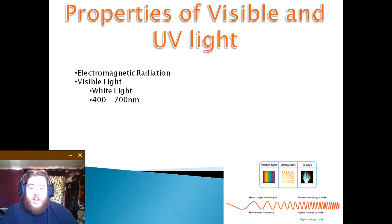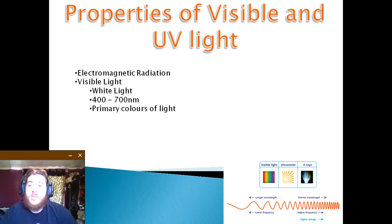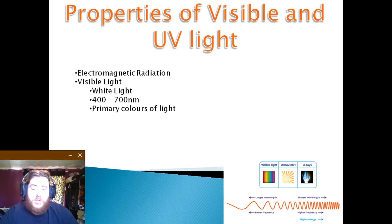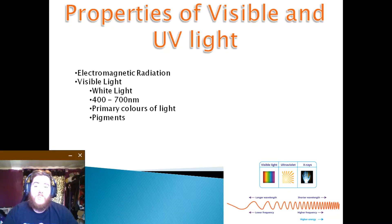If we see something in red, it is because it is transmitting red light towards us, and the same goes for green or blue, or the primary colours of light. We are able to see much more than just three colours, due to the mixing together in different levels. The colours we see are dependent on the pigments of the item from where the light is reflected off of.